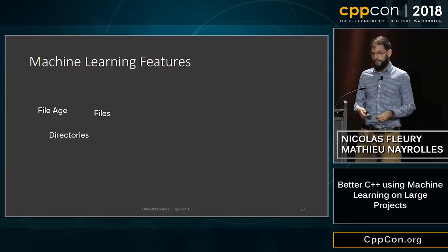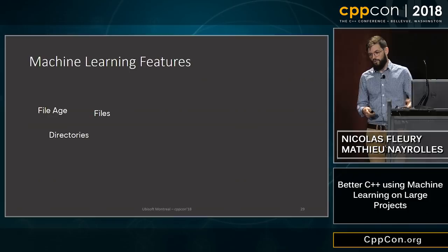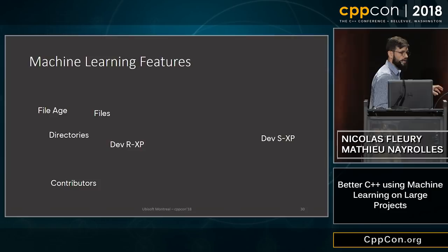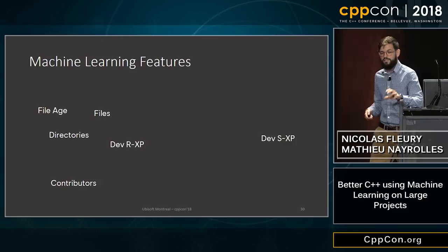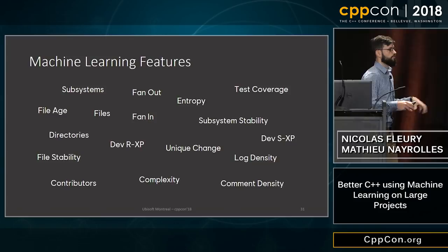We use many more features on each contribution to compute the likelihood of that contribution to introduce a new defect. With all these machine learning features, you can build a feature matrix. For all commits you will have features A through M, and then a class for each commit — buggy or sane — indicating whether that commit introduced a defect or not.